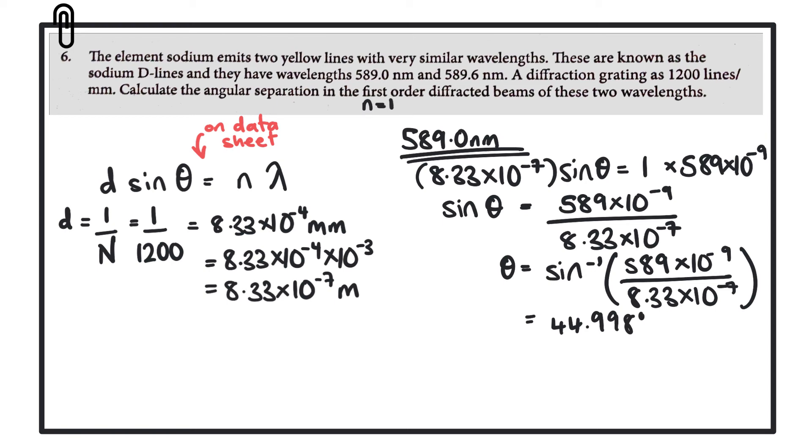So now let's have a look at the next wavelength, which is 589.6. The equation will be the same as the one above. The only difference we'll have is that the wavelength is 589.6 nanometers. So theta will be equal to the inverse sine of 589.6 by 10 to the minus 9.